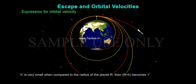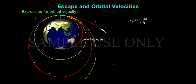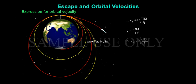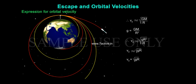When H is very small compared to the radius of the planet R, then R + H becomes R. In such a case, V0 ≈ √(GM / R). We know that g = GM / R², therefore V0 ≈ √(gR² / R) = √(gR). Therefore, V0 = √(gR).